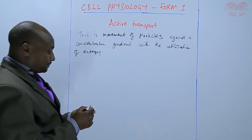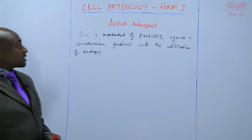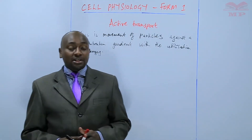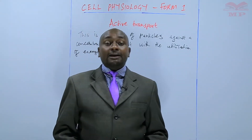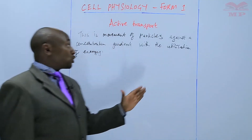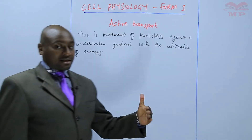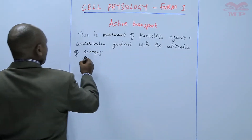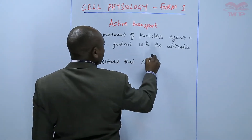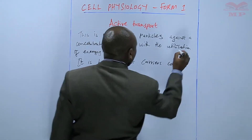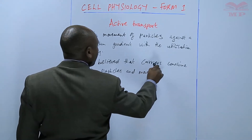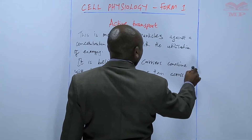It is believed that for the particles to move against a concentration gradient with utilization of energy, there are some carriers that are required to carry these particles across the cell membrane of plant cells or animal cells. A lot of energy is spent to make sure these particles move against a concentration gradient. It is believed that carriers combine with the particles and move them across the cell membrane.